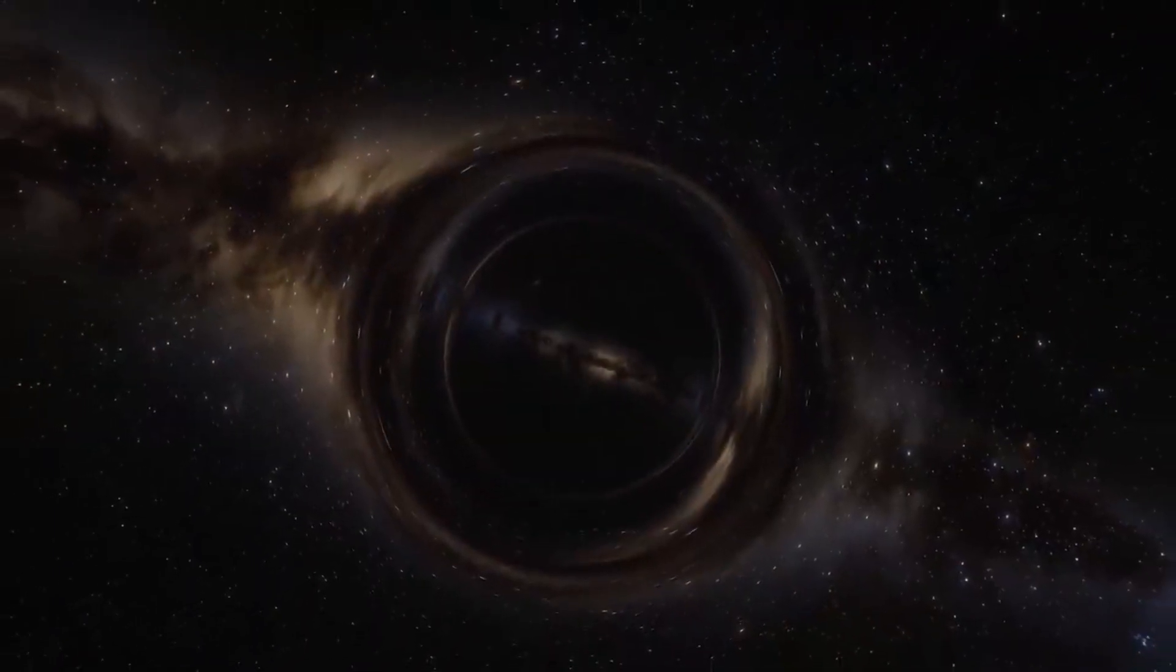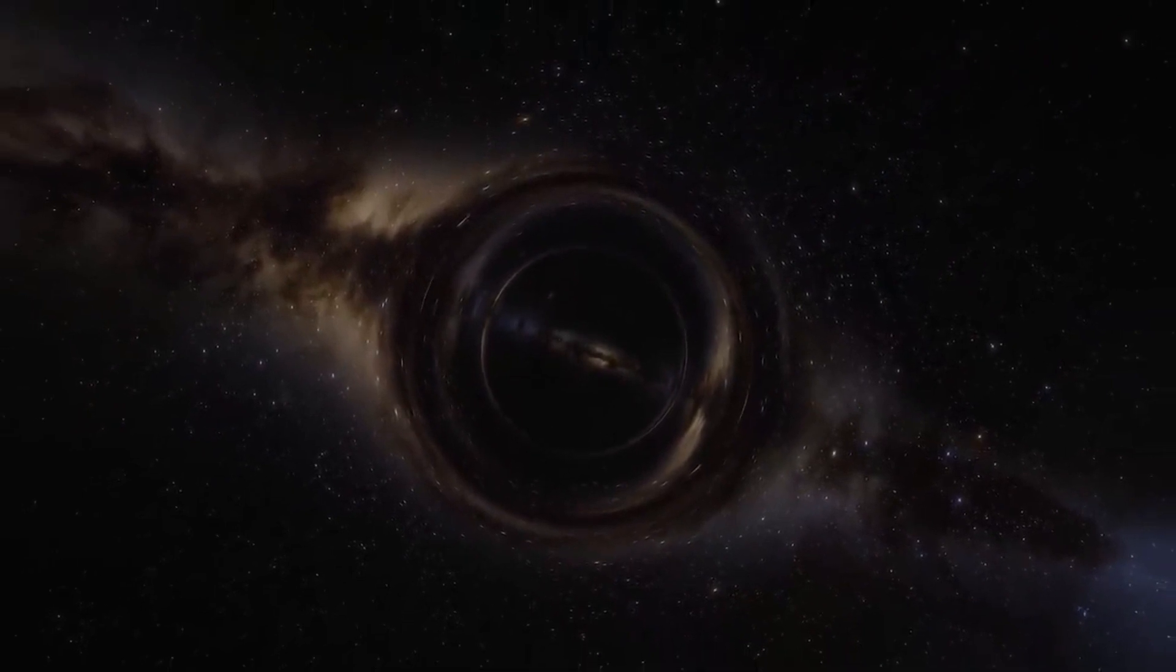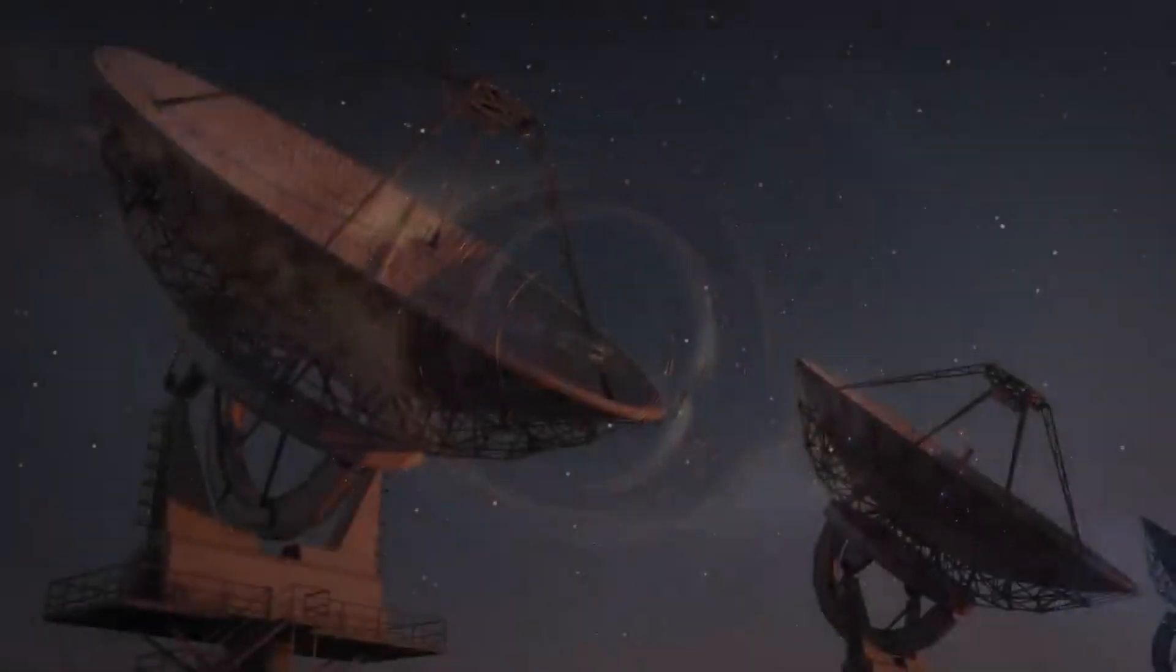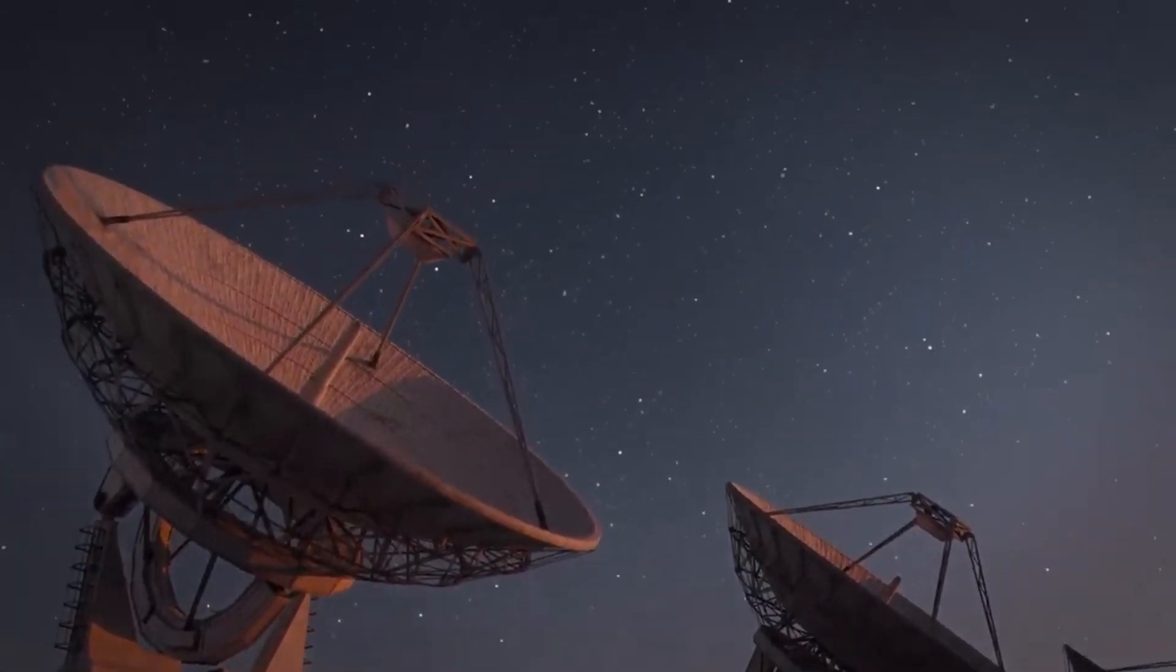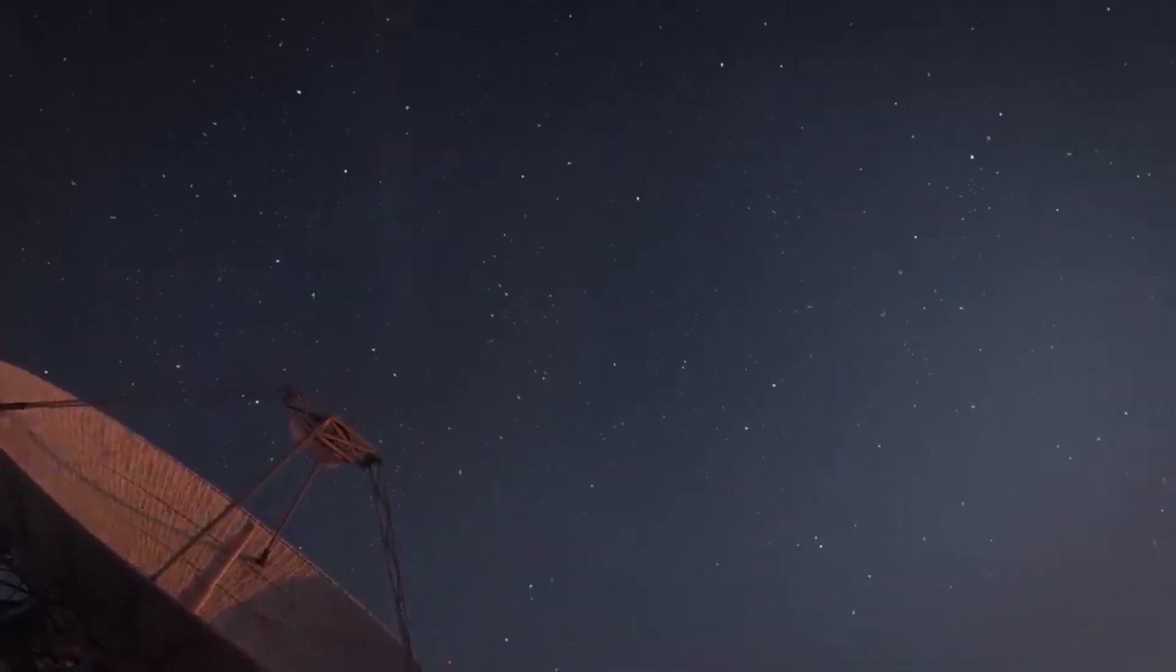Intermediate-sized black holes are too massive to form from the gravitational collapse of a single star. Scientists have proposed three compelling hypotheses to complete the genealogy of intermediate-sized black holes.